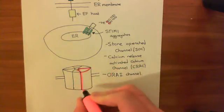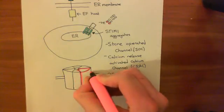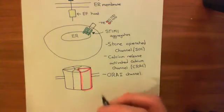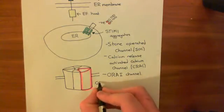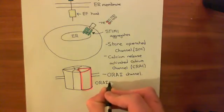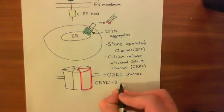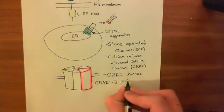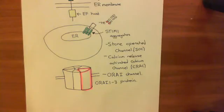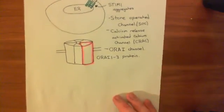There are three different Orai-1 proteins known, and you can make Orai-1 channels out of all three: Orai-1 one through three. These Orai-1 channels are made up of these Orai-1 one through three proteins. Orai-1 one is very commonly used, but they are all important.